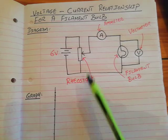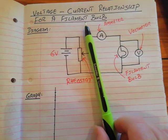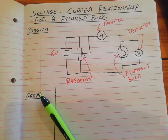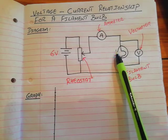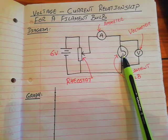Good morning. The voltage-current relationship for a filament bulb is very similar to the voltage-current relationship experiment for a metallic conductor, only you have a filament bulb placed in the circuit instead of the metallic conductor.